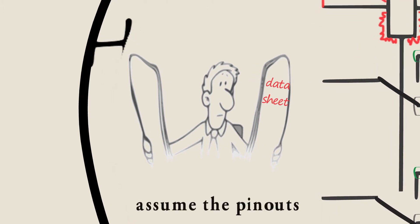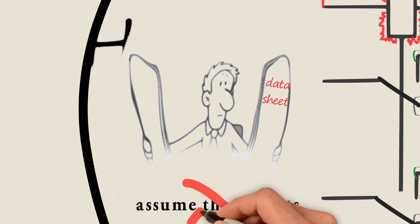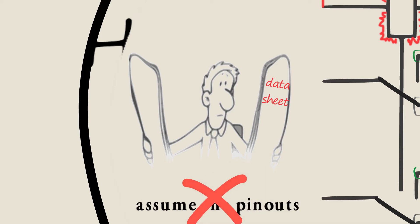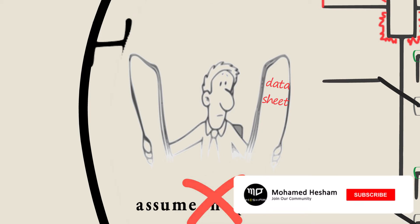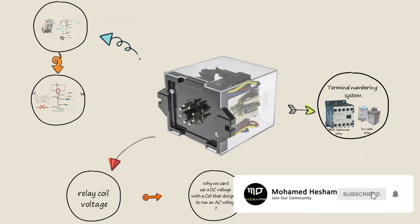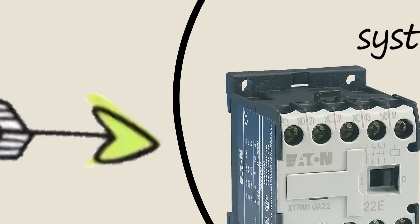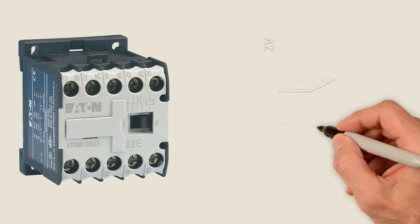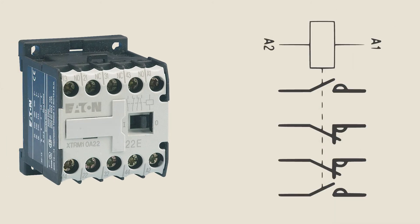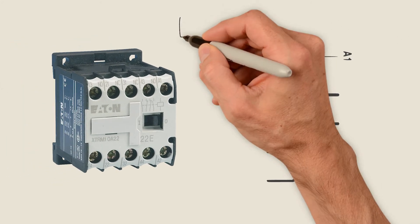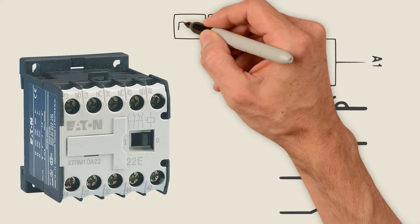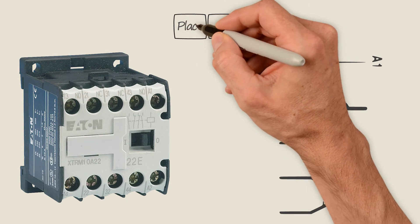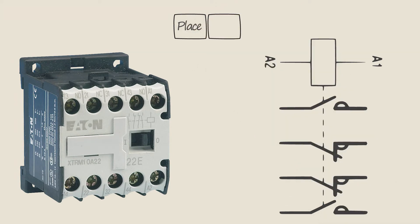Don't for a moment assume the pin-outs and the specifications by yourself. Let's see how the terminal numbering system works in this mini contactor relay. The IEC schematic symbol uses two digits — the first digit tells us the place of the switch.